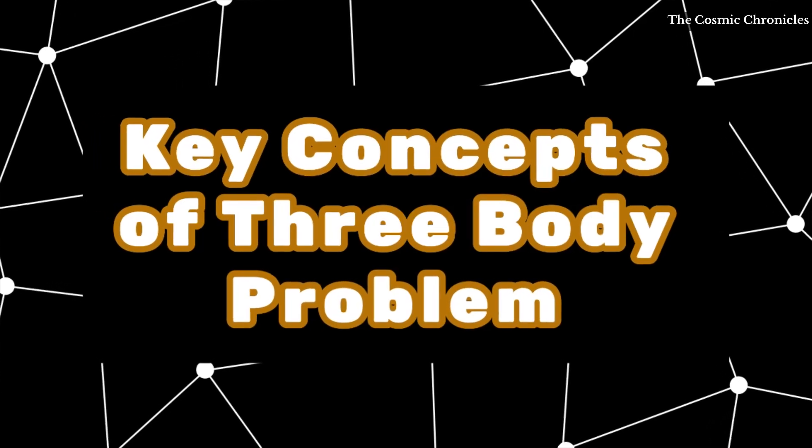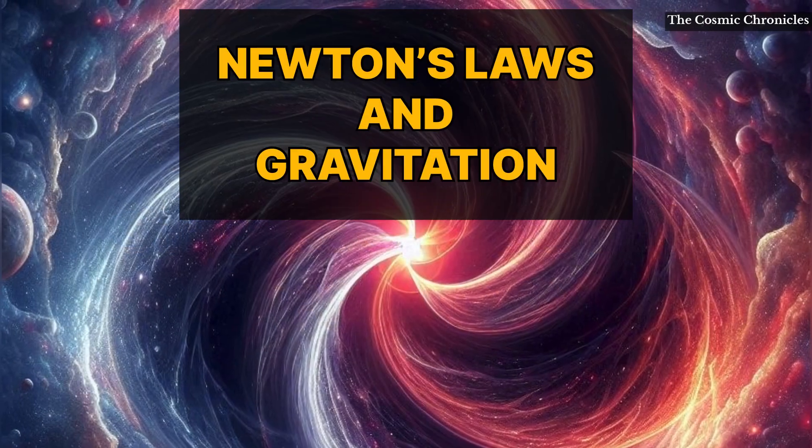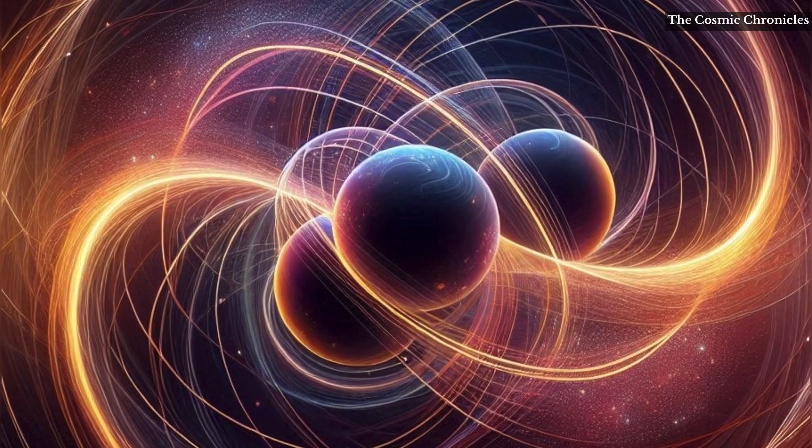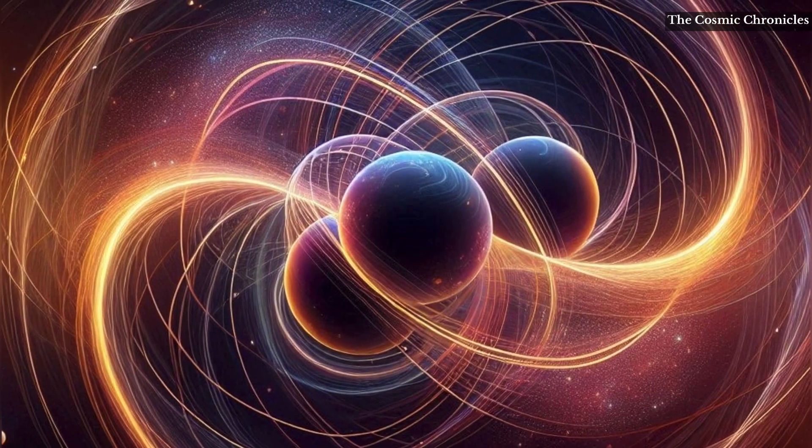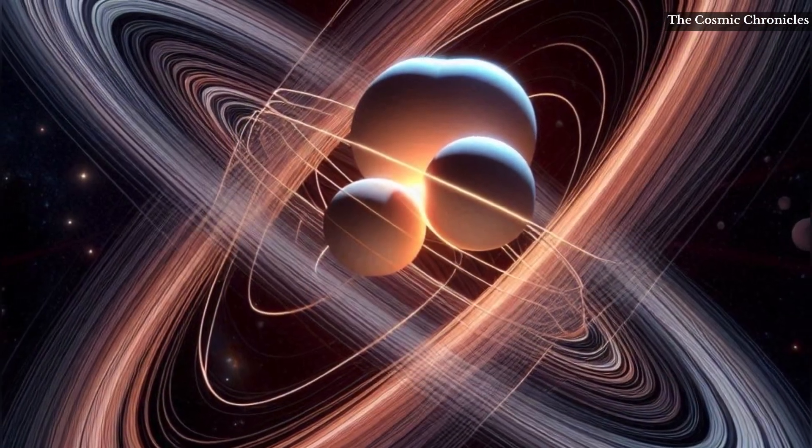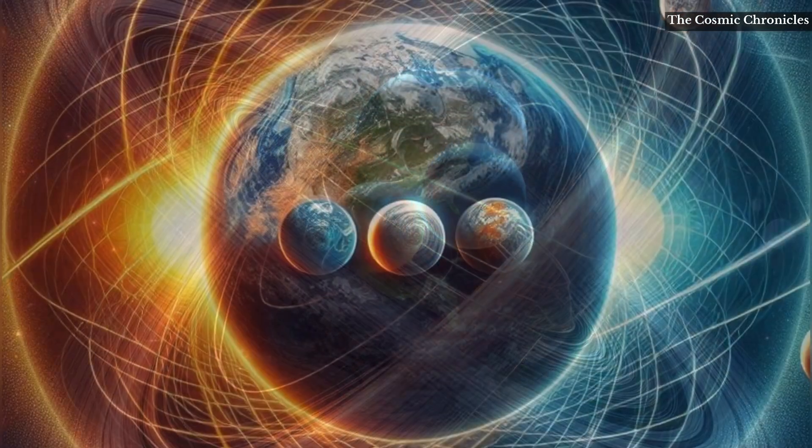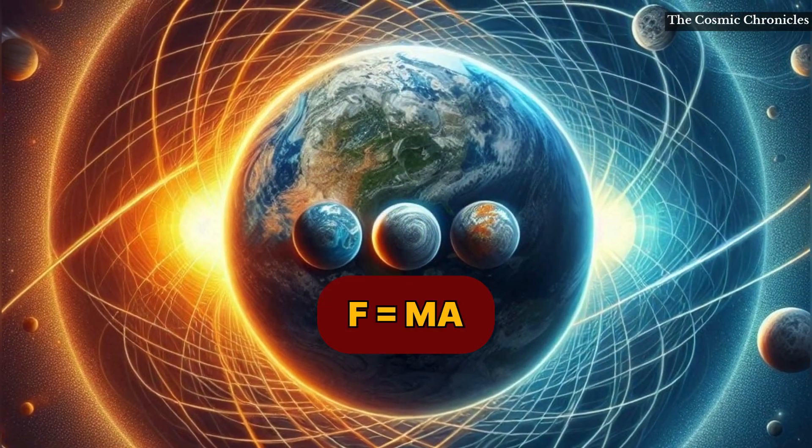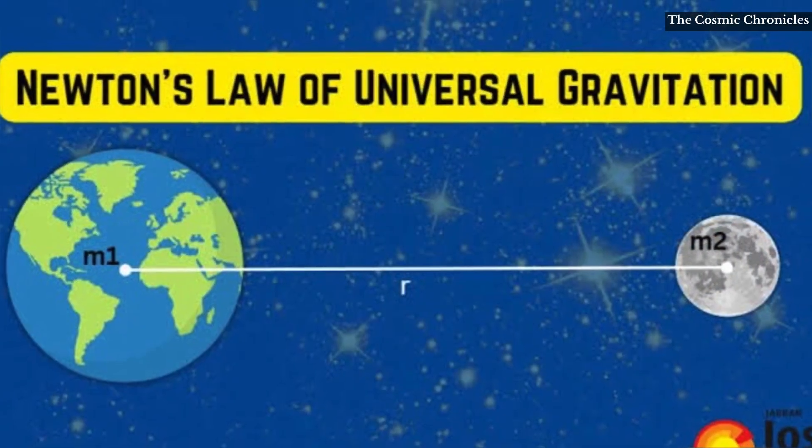Key concepts of the three-body problem: 1. Newton's laws and gravitation. Each body in the system exerts a gravitational force on the other two bodies, causing them to accelerate and move in complex paths. The equations that govern the motion of the bodies are based on Newton's second law of motion, F = ma, and the law of universal gravitation.